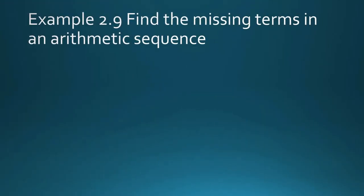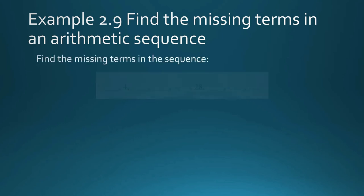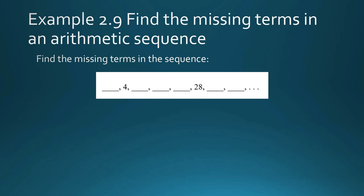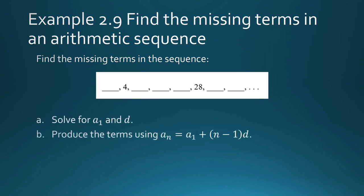Example 2.9: find the missing terms in the arithmetic sequence. We must fill in the blanks, which means we need the first term and the common difference. Our strategy is: first find a sub 1 and d, then use them to compute the missing terms. The first term and the third term positions are identified.